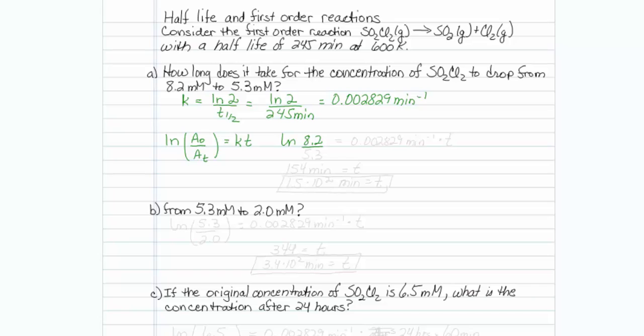Our concentration at some unknown time is 5.3, and they're both millimolar. That's fine. The units will cancel, is equal to 0.002829 minutes to the minus 1 times whatever time this occurs at. So we'll just solve for T.